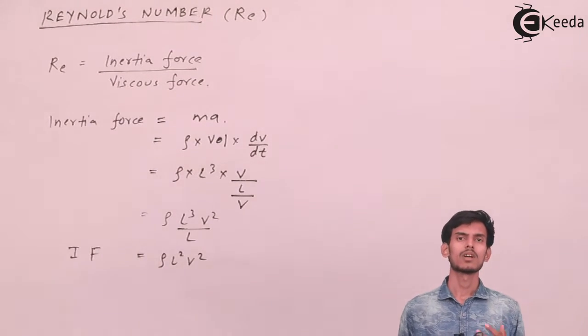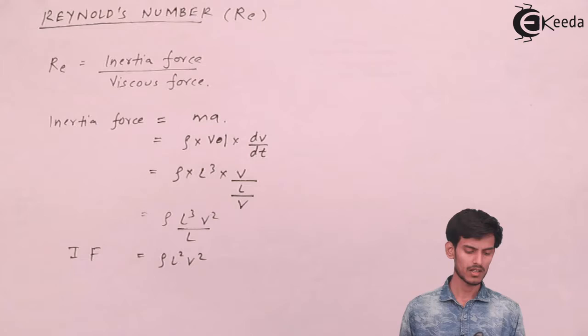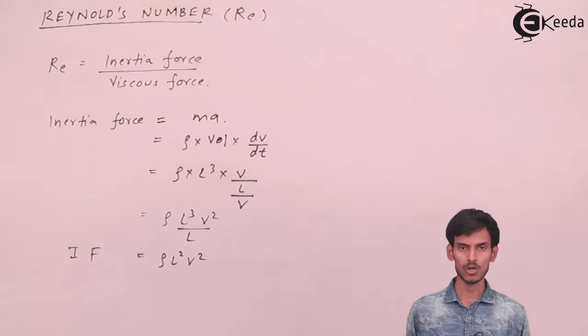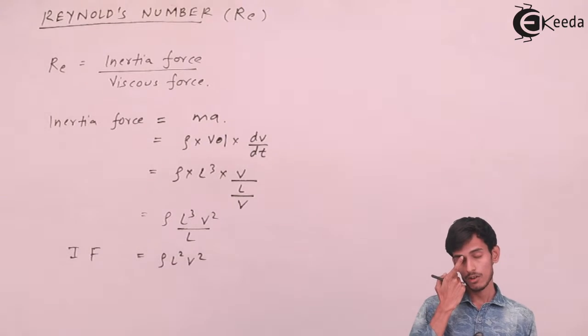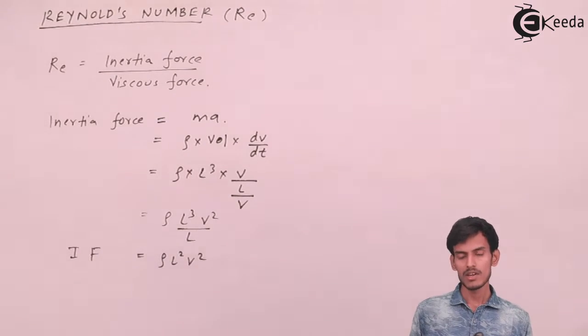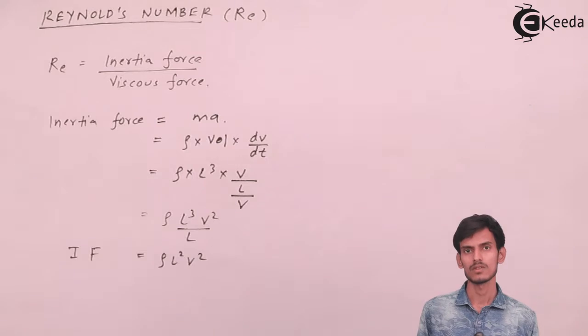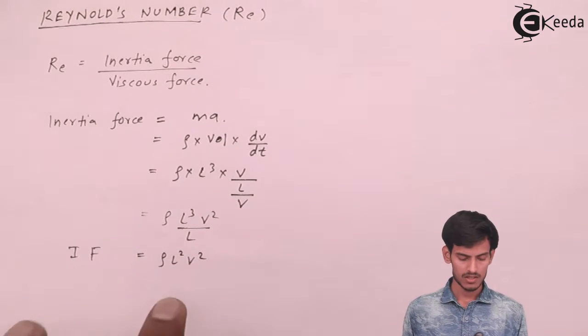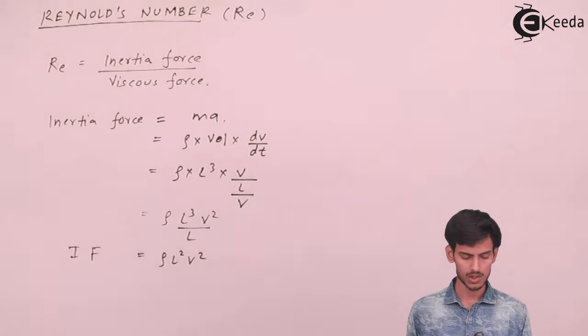Inertia force is mass times acceleration. Mass I've written as ρ times volume. Volume is L³. Acceleration I've written as dv/dt where dv is velocity and dt is time. Time I've written as L/v, distance upon velocity. So you come up with ρv²L², inertia force.